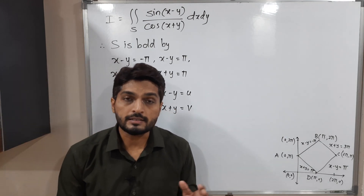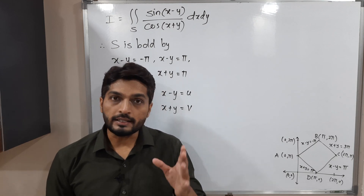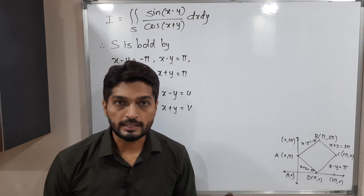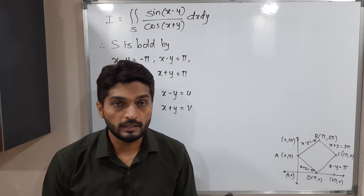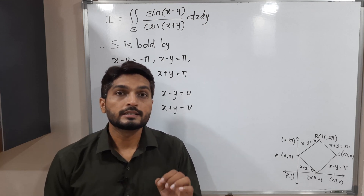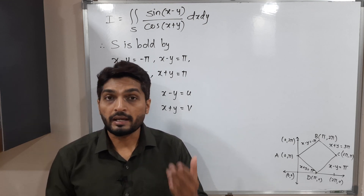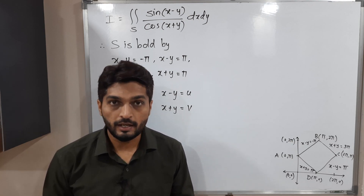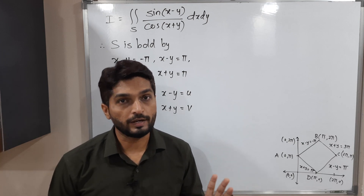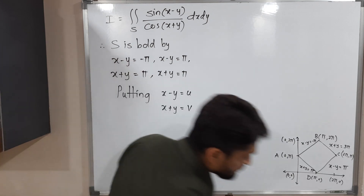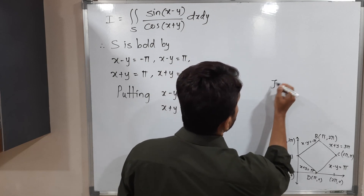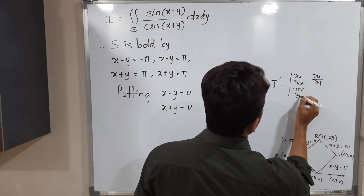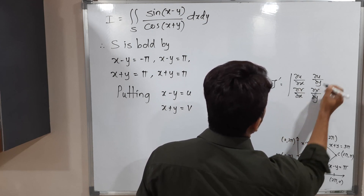After the substitution, the next task is to find the Jacobian. In double integration, when we substitute variables, we compute the Jacobian. As mentioned in earlier videos, it is sometimes better to find J-prime first and then find J from it. J-prime is the matrix of partial derivatives: ∂u/∂x, ∂u/∂y, ∂v/∂x, ∂v/∂y.